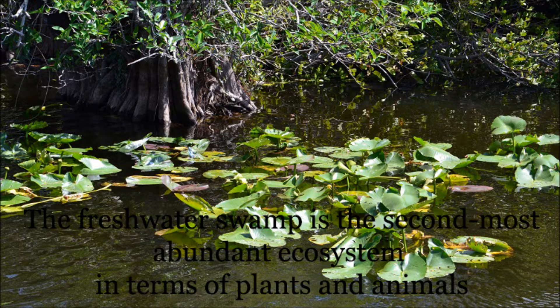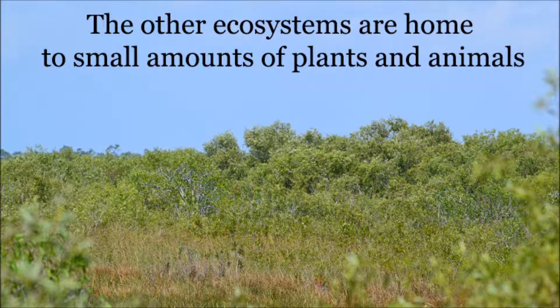The freshwater swamp is home to several types of animals, such as some birds, mollusks, amphibians, one mammal, fish, and reptiles, but only contains six types of plants. The other three ecosystems contain only fish, reptiles, one mammal, and four types of plants.